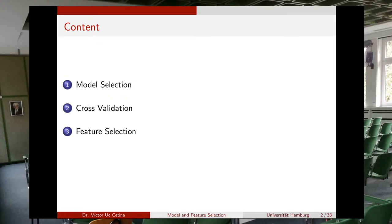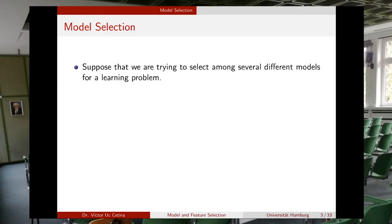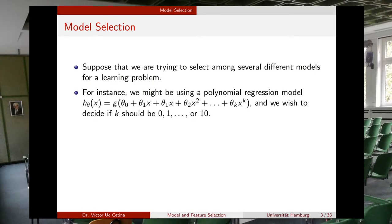So let's start talking about models. Suppose that we are trying to select among several different models for a learning problem, like the first simple model that we studied — the polynomial — which could be for example a case of regression or also for classification. As you remember, when you say I want to work with a polynomial, at that time you are selecting a class of model, but you still need to find the best degree of this polynomial.